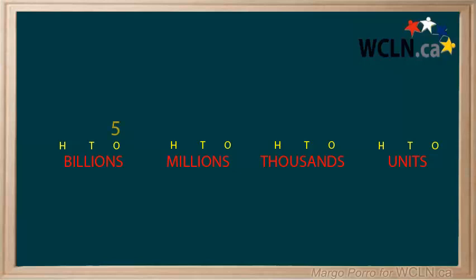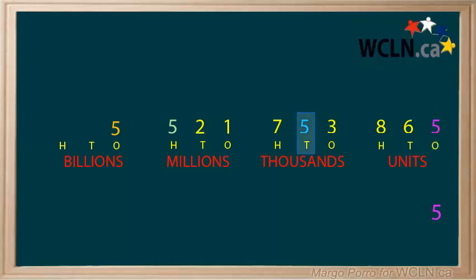Place value helps us to know the value of a number. Take a look at 5,521,753,865. Each five in this number has a different value. This five is in the ones place, so it has a value of five ones, or simply five. What is this five worth? It is in the ten thousands place, so it is worth 50,000.